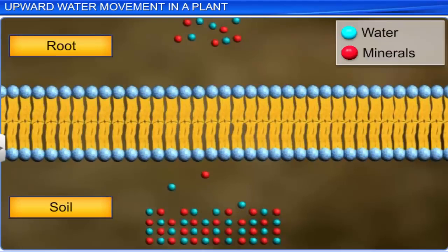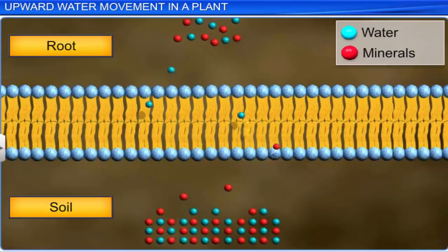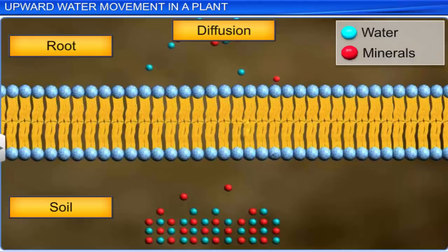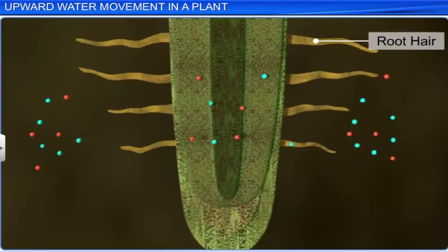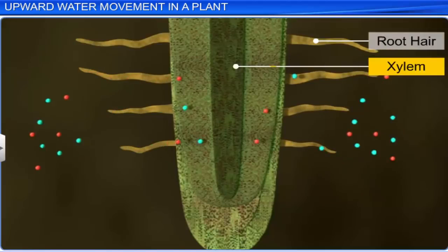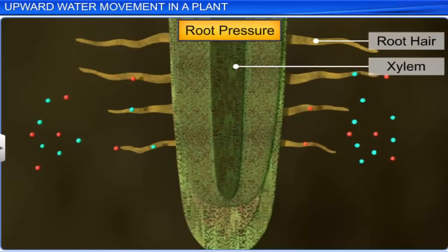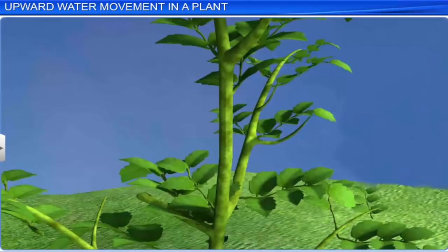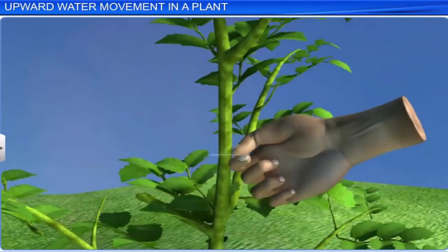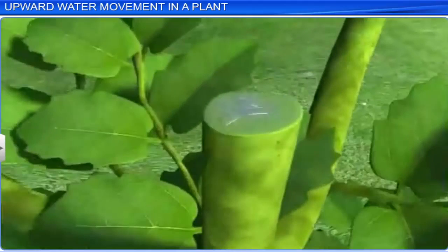Along with the water, various mineral ions from the soil are also pushed into the root vascular tissues by diffusion. As a result, the pressure inside the xylem increases. This positive pressure is known as root pressure. Root pressure can be observed in a plant by a cut stem experiment. In the early morning hours of a humid day, if a soft stem is cut horizontally near its base with a blade, drops of solution ooze from the cut stem.